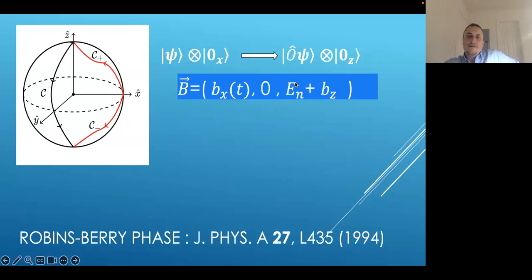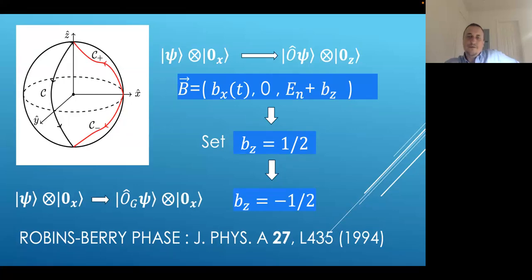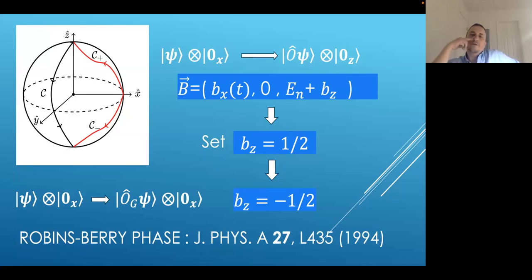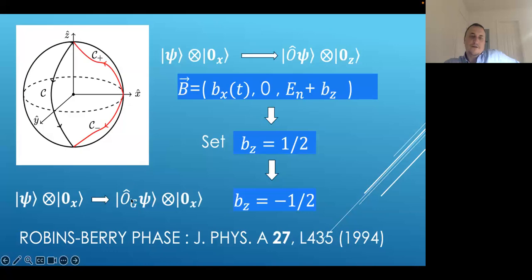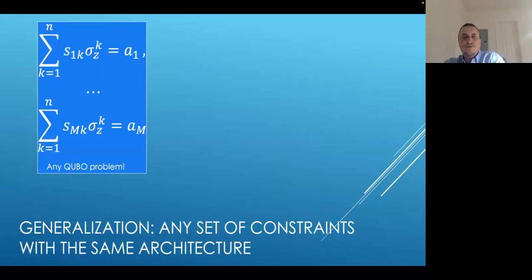This looks already very close to a Grover oracle, but it is not yet, because we want to change sign of only the state with zero eigenvalue. We can do this by performing quantum annealing twice: first with B_z = 1/2, marking by minus sign all amplitudes of states with non-positive eigenvalues; then repeating to mark by minus sign all states with eigenvalue below zero. As a result of those two steps, we obtain precisely our Grover oracle that changes sign of only states with zero eigenvalue. This is basically the idea of how we generate a Grover oracle for this problem.